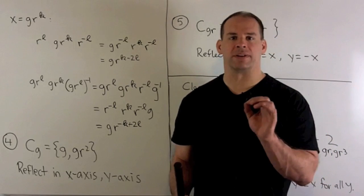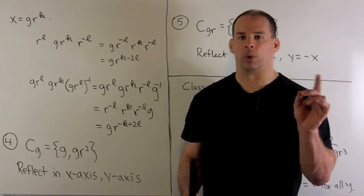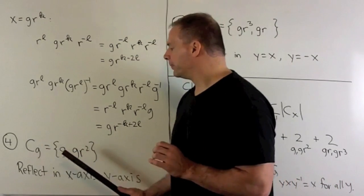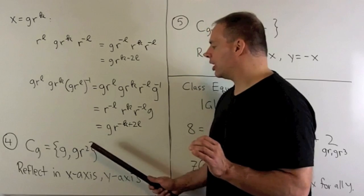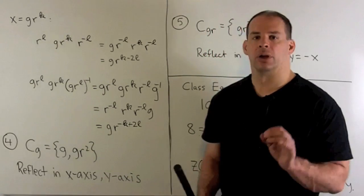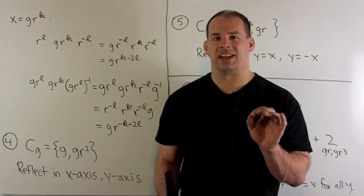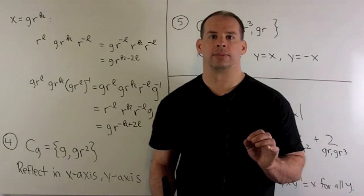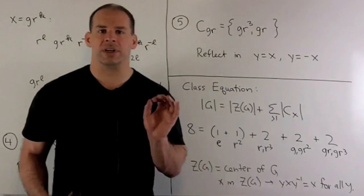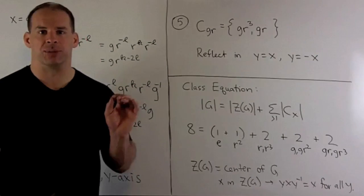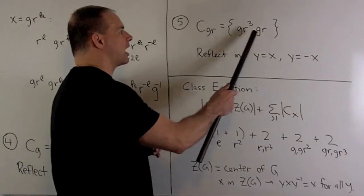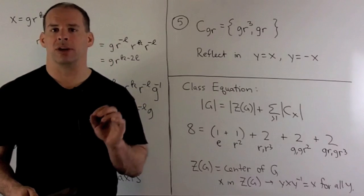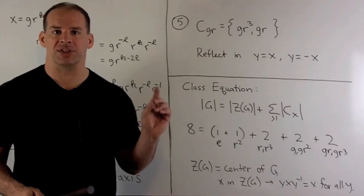As we try out different k's and l's, what comes out? First, we'll have a class for G: this is going to be G and G·R squared. So those are the reflections in the x-axis and the y-axis. Then, if we consider the class for G times R, we'll get G times R and G times R cubed. So those are our reflections in Y equals X and Y equals minus X.